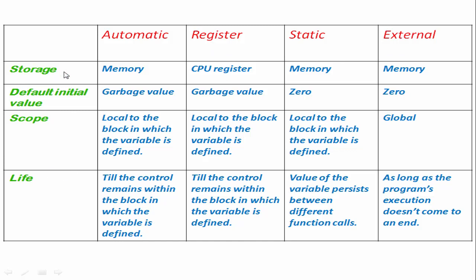The first property is storage. Automatic storage class variables are stored in memory. Register storage class variables are stored in the CPU register. Static and external storage class variables are stored in memory. The next property is default initial value: for automatic and register storage class the default initial value is a garbage value, and for static and external storage class variables the default initial value is 0.